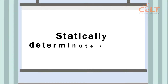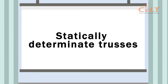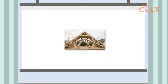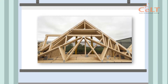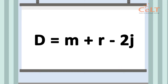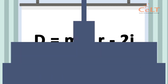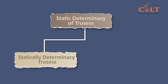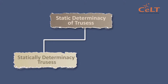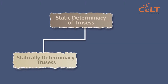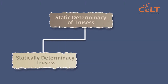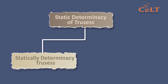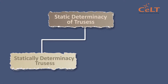Today we are going to learn about statically determinate trusses, statically indeterminate trusses, and how to calculate the degree of indeterminacy. A truss is considered statically determinate when the static equilibrium equations can be used to find the reactions on the structure. Only statically determinate trusses can be analysed with the method of joints and method of sections.